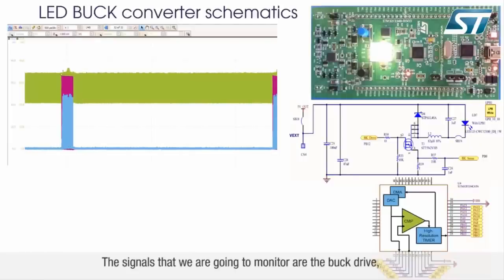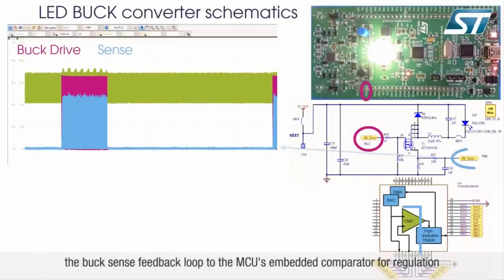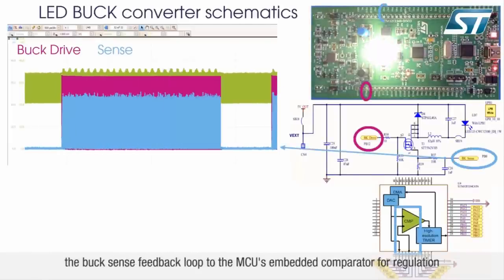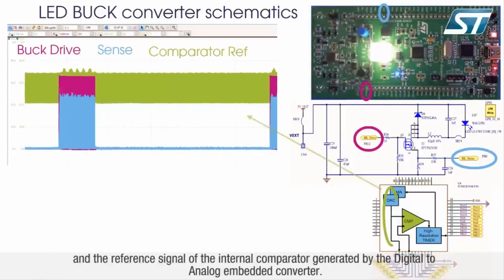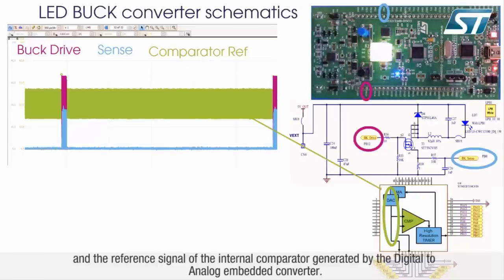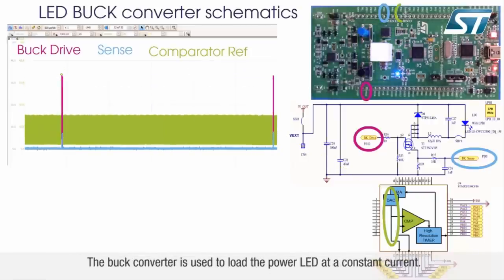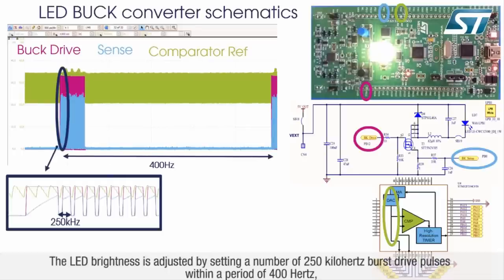The signals we are going to monitor are the buck drive, the buck sense feedback loop to the MCU's embedded comparator for regulation, and the reference signal of the internal comparator generated by the digital-to-analog embedded converter. The buck converter is used to drive the power LED at a constant current.